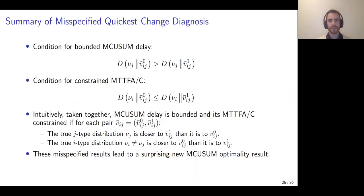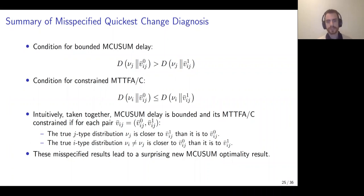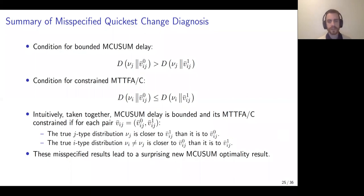In summary for the misspecified results: a condition for bounded misspecified CUSUM delay is that the true type-J distribution must be closer to the second distribution in each pair used to design MQSUM than to the first distribution in each pair. The condition for a constrained mean time to false alarm is that the true type-I distribution, for I not equal to J, must be closer to the first distribution in each pair than to the second distribution. These misspecified results also lead to a surprising new MQSUM optimality result.